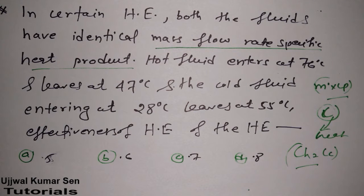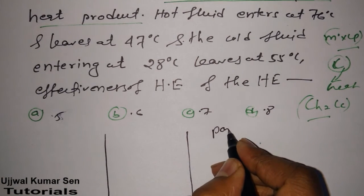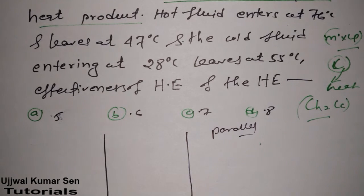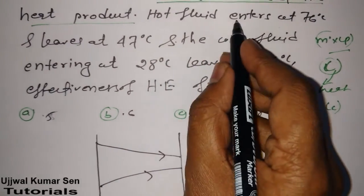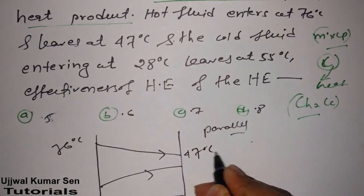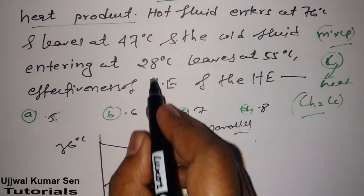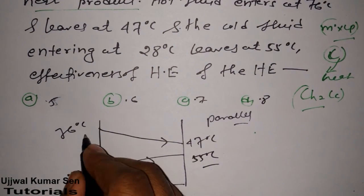What type of heat exchanger should we draw? We can draw any heat exchanger - maybe parallel flow, maybe counter flow. This is a parallel flow heat exchanger. Hot fluid enters at 76 degrees centigrade and leaves at 47 degrees centigrade. Cold fluid entering at 28 degrees centigrade and leaves at 55 degrees centigrade.